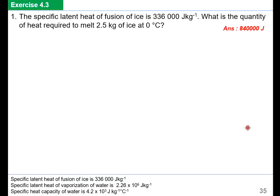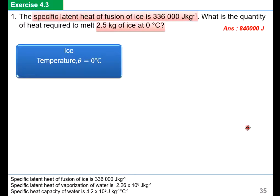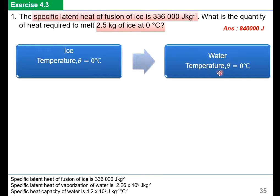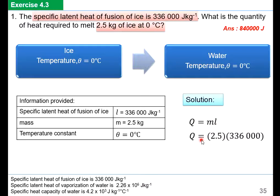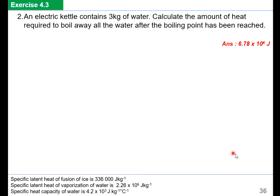Example 1: The specific latent heat of fusion of ice is 336,000 J/kg. What is the quantity of heat required to melt 2.5 kg of ice at 0°C? Information given: l = 336,000 J/kg, m = 2.5 kg, temperature constant at 0°C. Using Q = ml: Q = 2.5 × 336,000 = 840,000 joules.